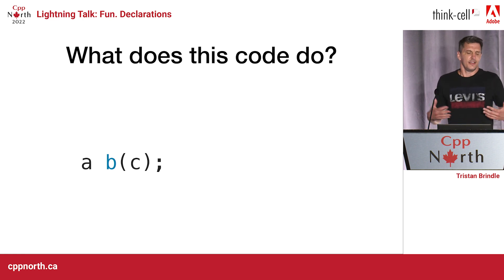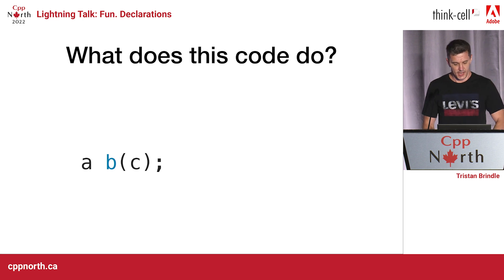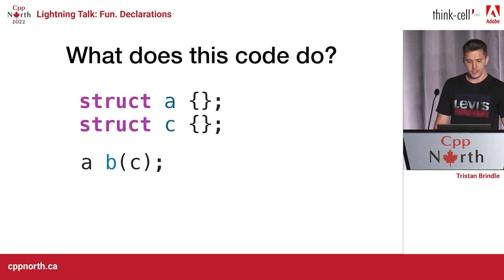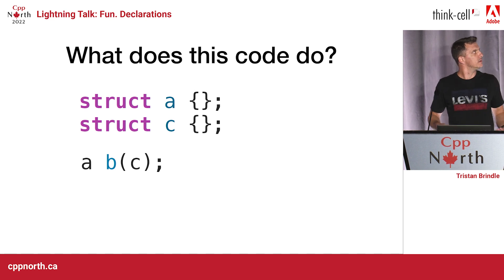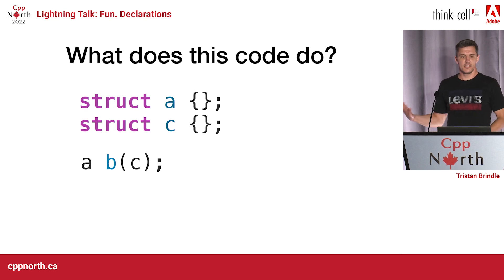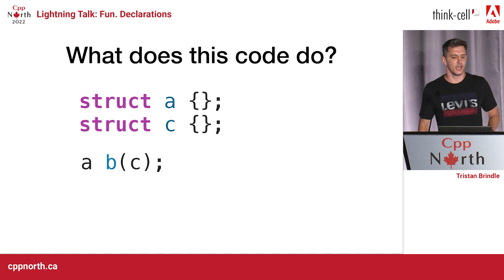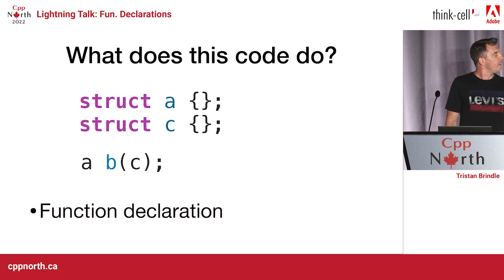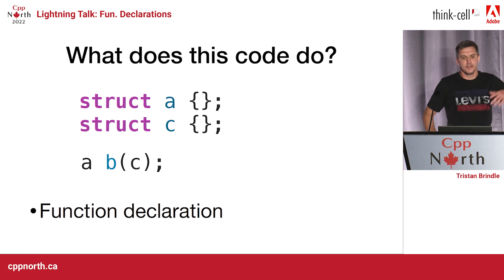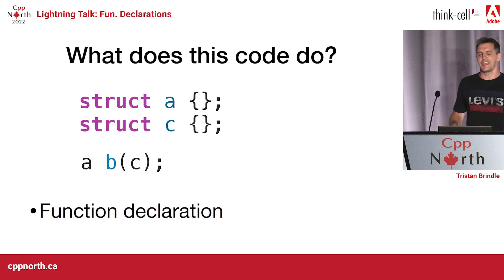It doesn't take much C++ experience — maybe just a couple of years — to obviously know that this is a function declaration, right? This is a function b that takes an argument of type c and returns an a. This is a function declaration. Yeah, obviously.